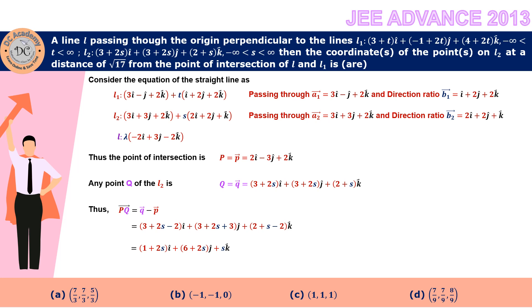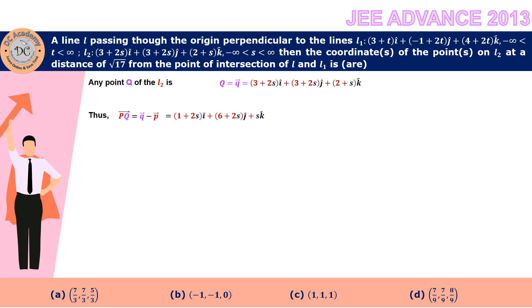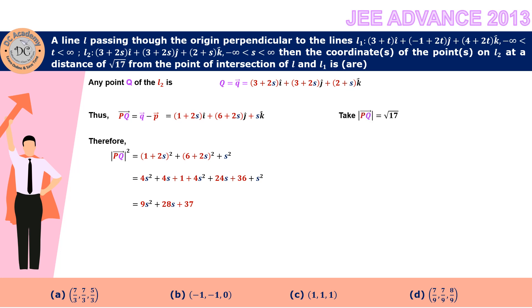It is given that |PQ| = √17. Computing the modulus of PQ, we get (1 + 2s)² + (6 + 2s)² + s². Expanding and simplifying gives the quadratic 9s² + 28s + 37. Setting this equal to 17 gives 9s² + 28s + 20 = 0, which factorizes to give s = −10/9 and s = −2.